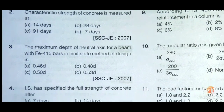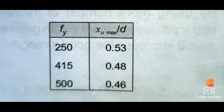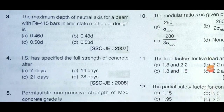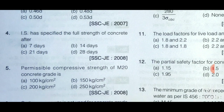Next question: The maximum depth of neutral axis for a beam with fy 415 bars in limit state method of design is — option A: 0.46d, option B: 0.48d, option C: 0.50d, and option D: 0.53d. For fy = 415, the neutral axis depth is 0.48d. From the reference table: for fy 250 it is 0.53d, for fy 415 it is 0.48d, and for fy 500 it is 0.46d. So option B is the correct answer.